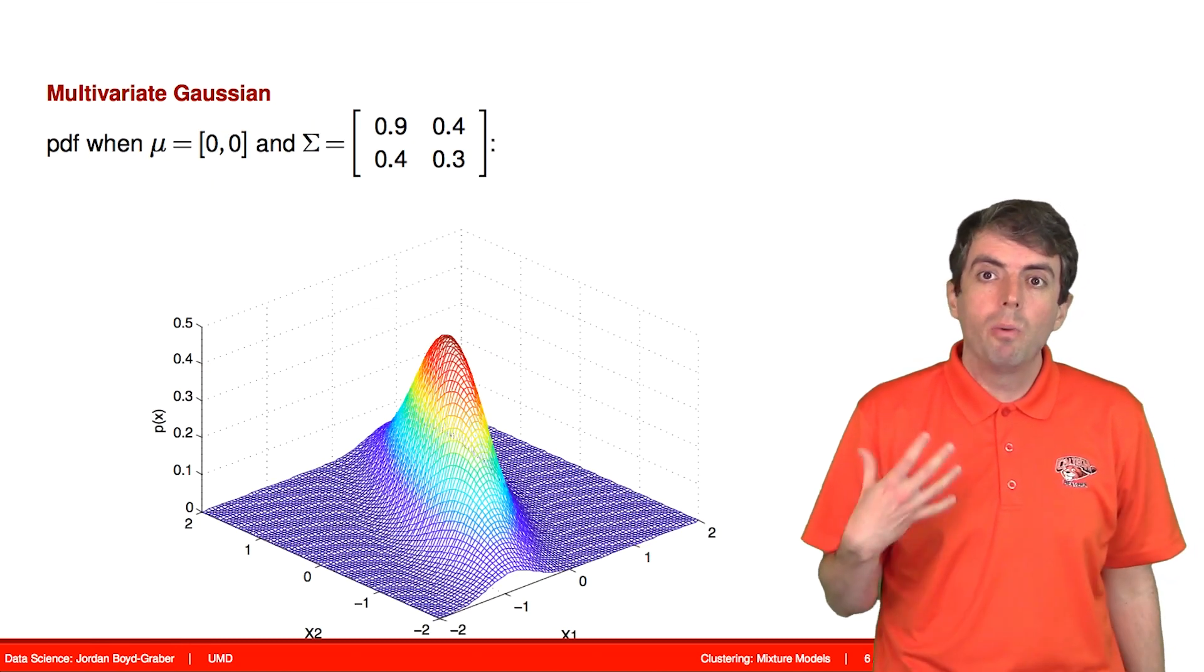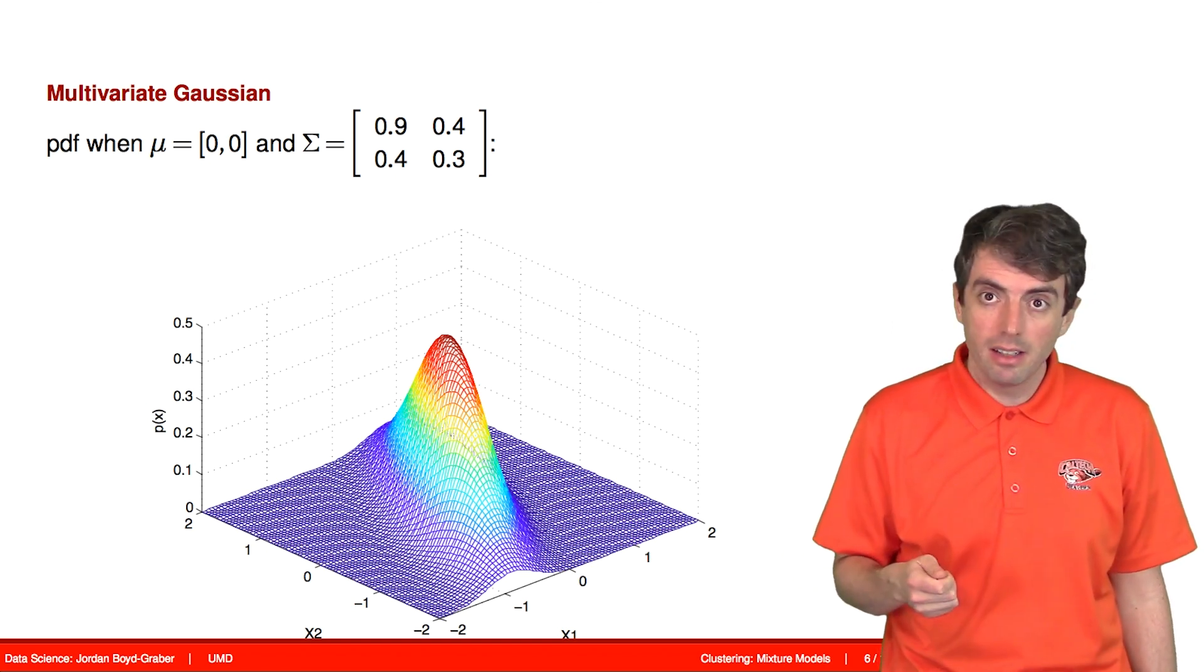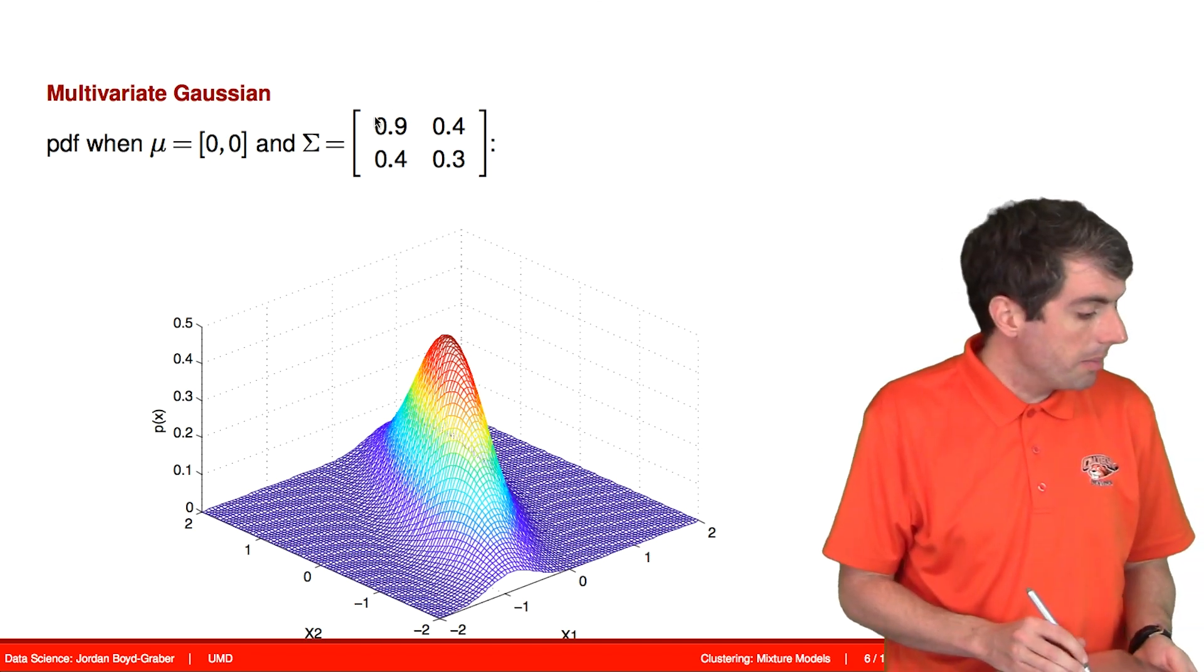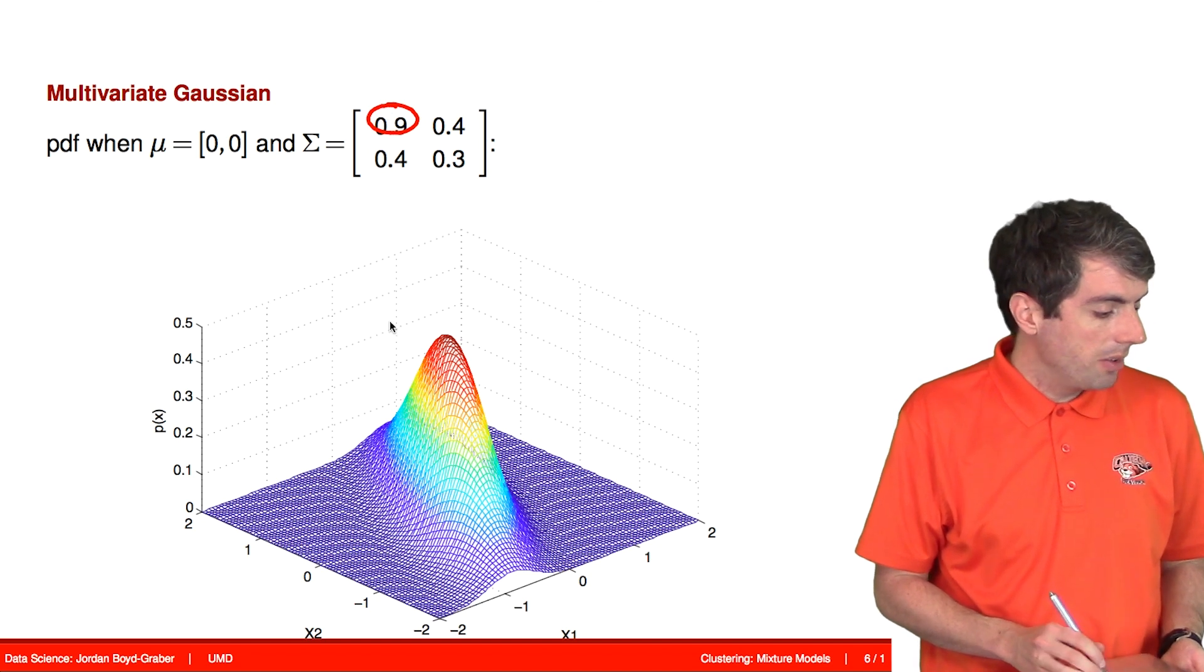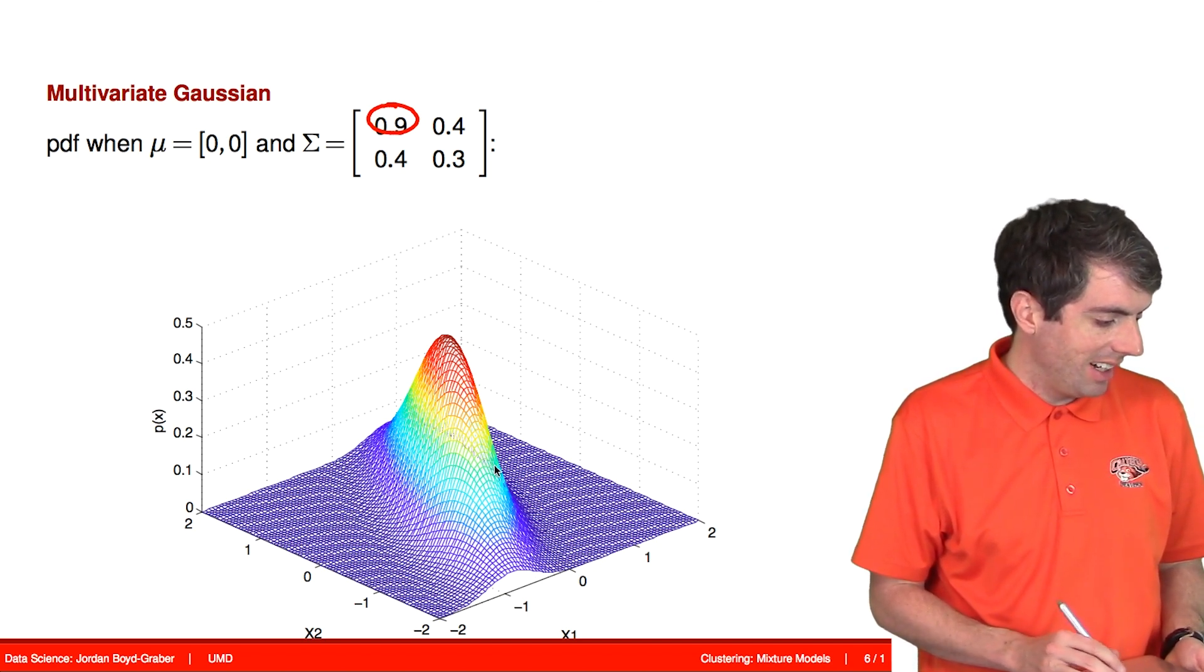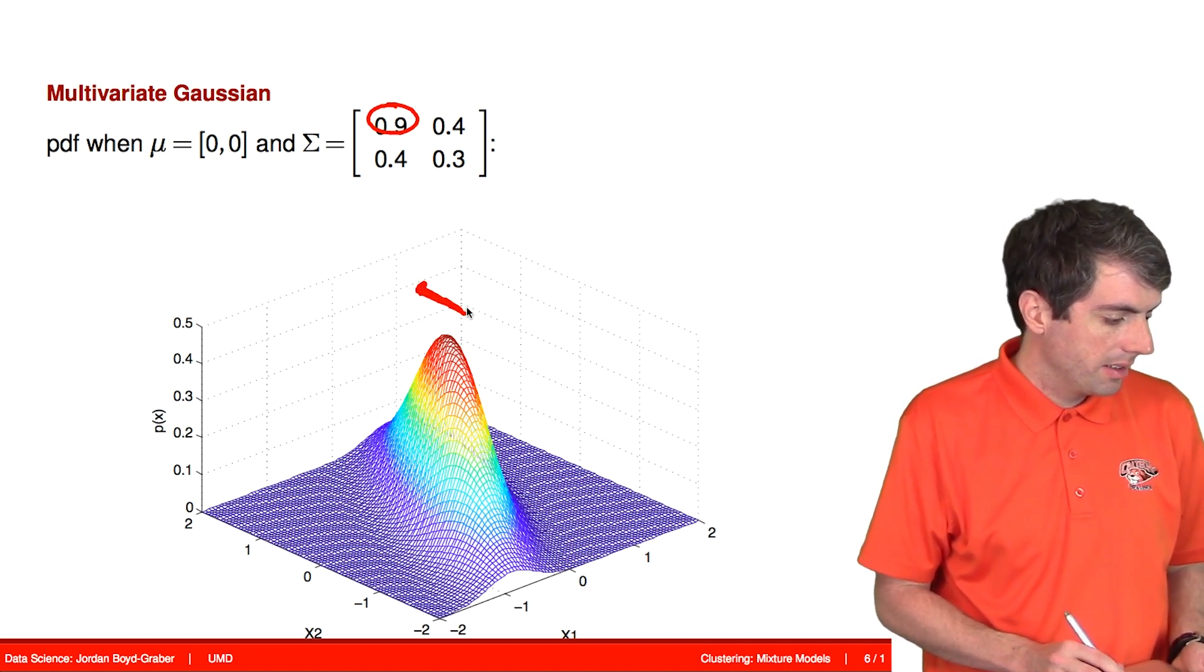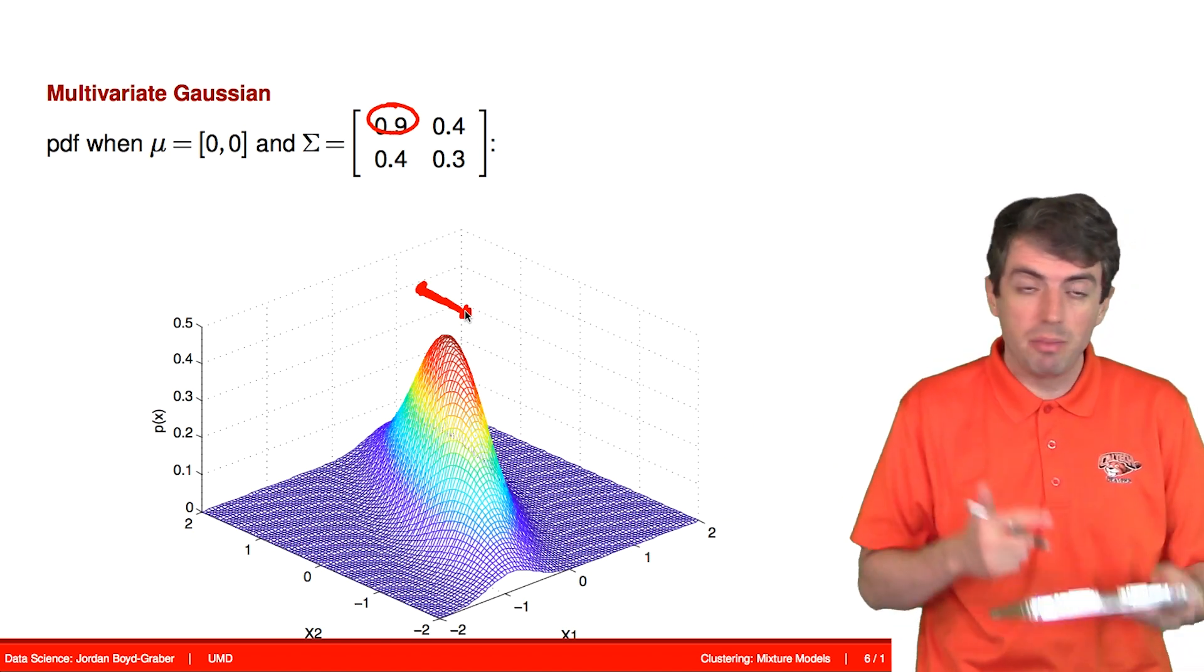So for example, when the mean is zero and the variance is this matrix here, this gives us a distribution that looks like this. When you look at the matrix, you can see that this number is quite a bit larger than the other. And what this is saying is that you're now going to have quite a bit more variance in one dimension along this ridge here than you do in the other directions. And so this is allowing you to capture this ridge-shaped distribution.